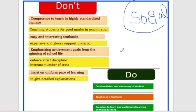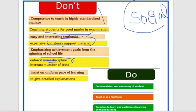Do's and don'ts — you have 4 options, including negative options. You have to use high standard language. You have to do coaching, social lessons in good math, easy and interesting textbooks, and material support. You have to do teaching, maintain discipline, and give a detailed explanation. These are the negative/don't options.